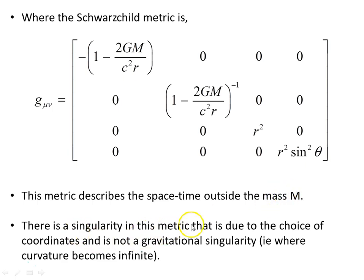Now this metric describes the spacetime outside the mass M. There is a singularity in this metric that is due to the choice of coordinates. It is not a gravitational singularity, where the curvature becomes infinite. We can see there is a value somewhere of r that leaves this undefined.